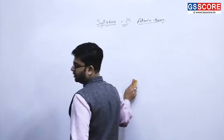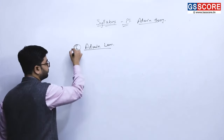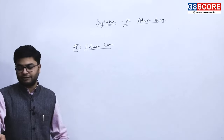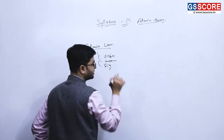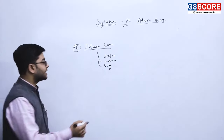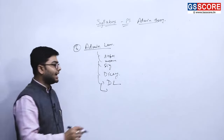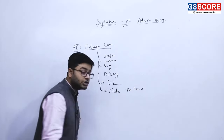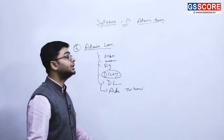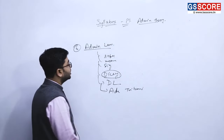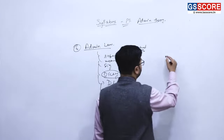Unit 6 is Administrative Law — a very surgical and focused unit. It covers the meaning and significance of administrative law, thinkers like A.V. Dicey, and the concept of delegated legislation. While Dicey is the primary thinker mentioned, others have also contributed. A strong conceptual understanding is essential, and this unit averages about 20 marks.